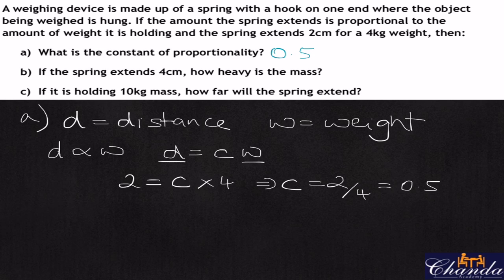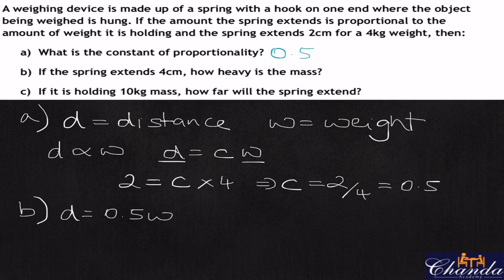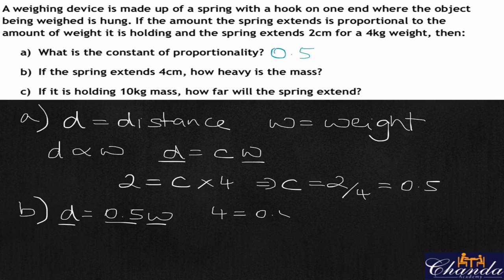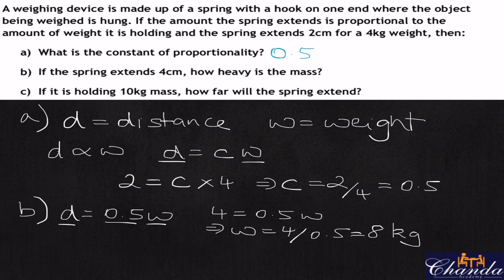The second part says: if the spring extends 4 centimeters, how heavy is the mass? Our formula is D equals 0.5W. This tells us the distance is always half the weight. All we do is replace D with 4: four equals 0.5W, therefore W equals four divided by 0.5, which gives us 8 kilograms. So the mass is 8 kilograms.